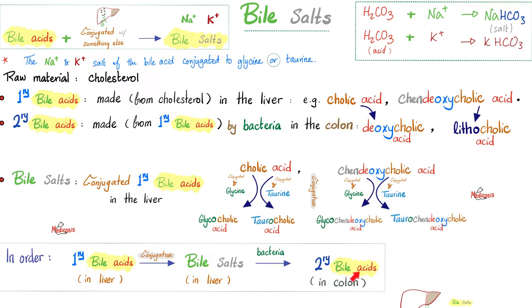Because bile acids and bile salts are the good guys — unlike bilirubin who is the bad guy — we need these good guys to come back to the liver. The intestine will return your lovely bile acids to the liver to recycle them. Hashtag enterohepatic circulation. Medicine makes so much sense once you understand what you're talking about.